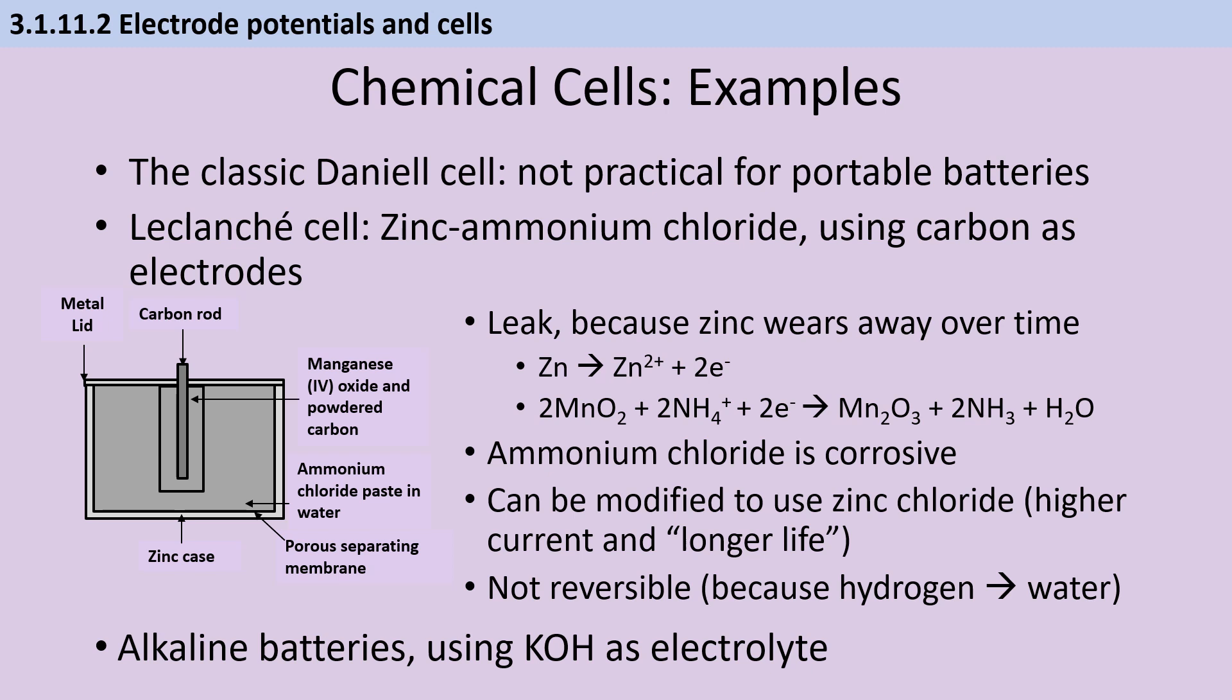Sometimes you see the cell be slightly modified, so instead of using ammonium chloride, it uses zinc chloride, which generates a higher current and is also a longer life cell. Alkaline batteries were the named example of a non-rechargeable battery if you did AQA GCSE chemistry, and instead of having an acidic electrolyte like ammonium chloride, you have an alkaline electrolyte like potassium hydroxide.